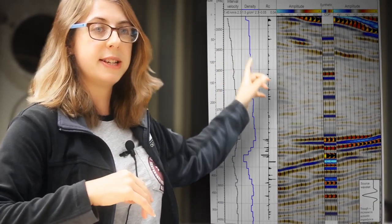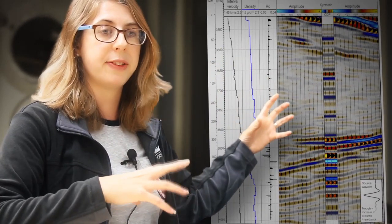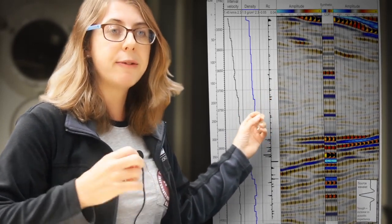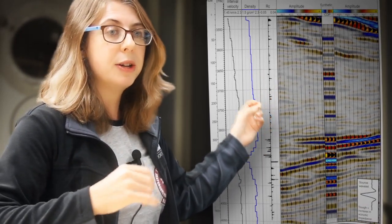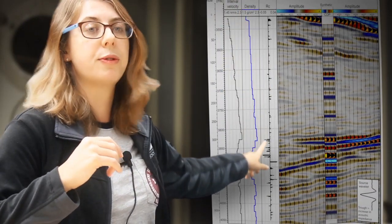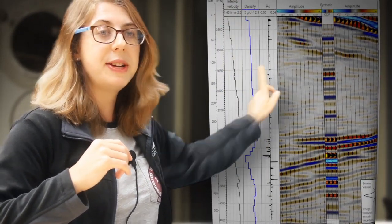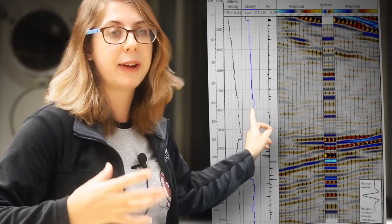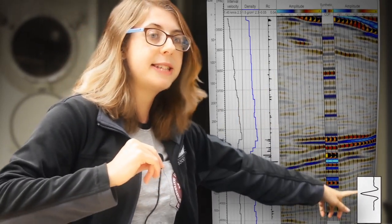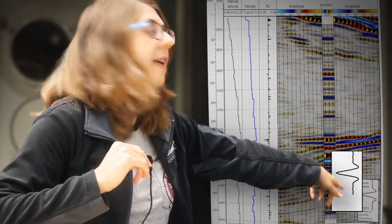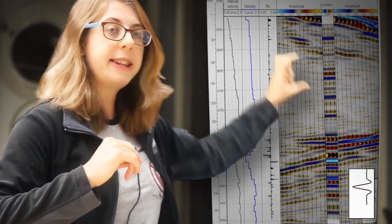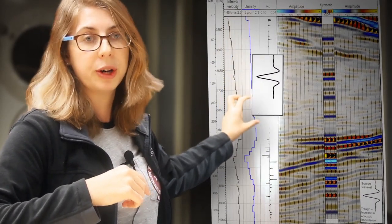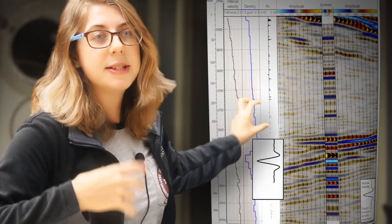So we take these velocity and density logs, multiply them together to get this parameter called the acoustic impedance. And we get reflections where that changes. So from that we can get this thing here which is called a reflection coefficient log. And these spikes sticking out to the right and left tell us where we're going to get reflections. We take a little sound pulse like you can see down there at the bottom of the diagram. And we send that sound pulse on our computers through this reflection coefficient log. And we develop a fake seismic trace.